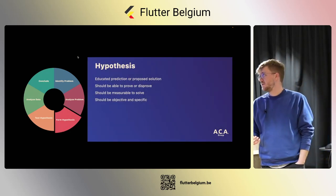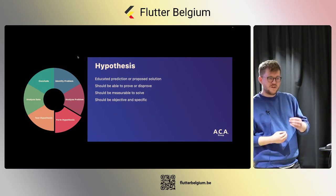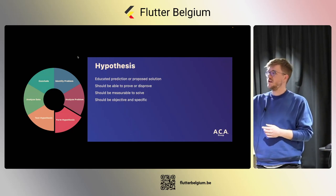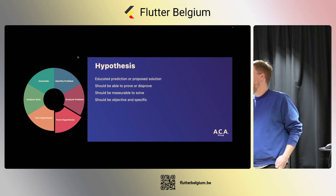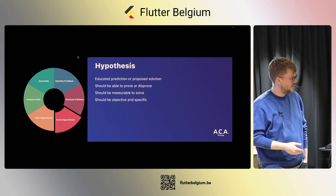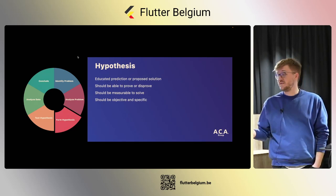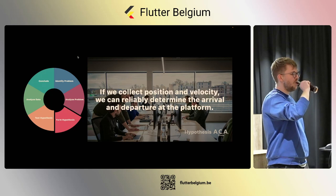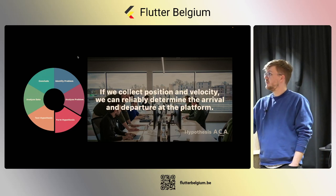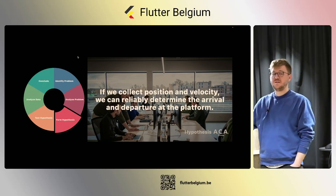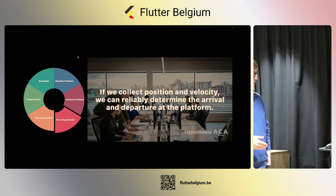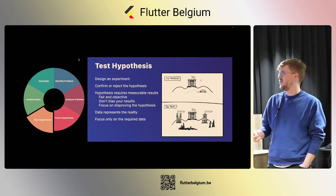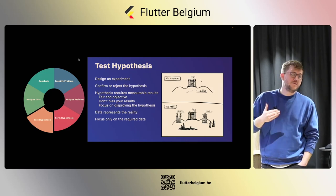We try to form a hypothesis — an educated prediction of what we're going to try. Importantly, we should be able to prove or disprove our hypothesis; otherwise we cannot form a conclusion and don't know if we've solved our problem. It should be measurable, objective, and specific. Our hypothesis: if we collect position and velocity using GPS, we can reliably determine arrival at the platform. The next step is to test it — can we prove it really works? We design an experiment to confirm or reject the hypothesis.